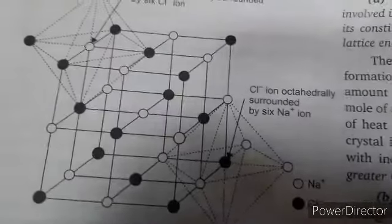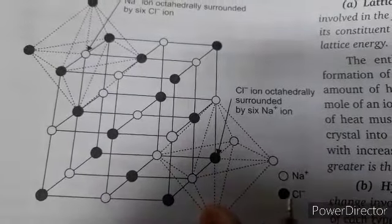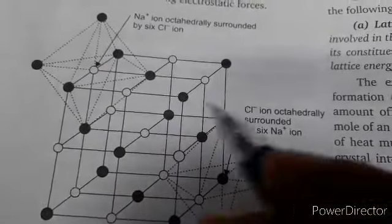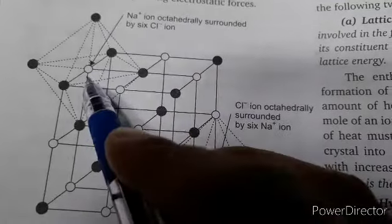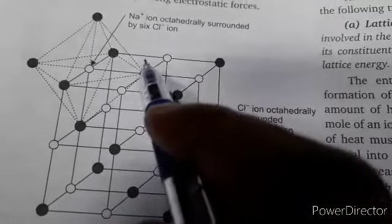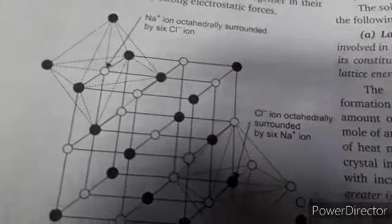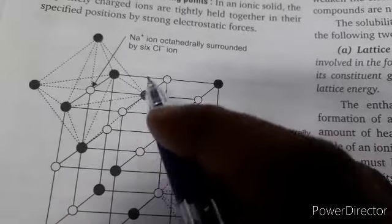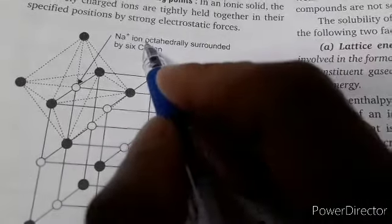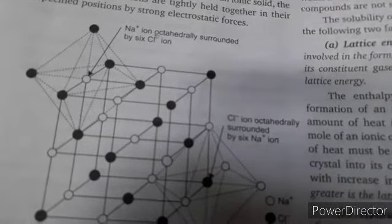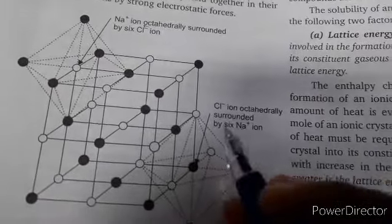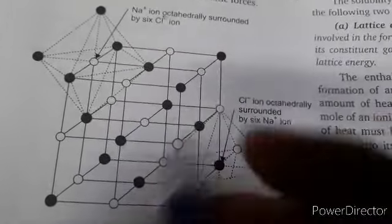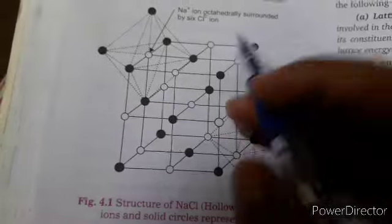In the NaCl crystal lattice, sodium ions (Na⁺) and chloride ions (Cl⁻) are arranged so that one Na⁺ ion is surrounded by six Cl⁻ ions, and one Cl⁻ ion is surrounded by six Na⁺ ions — they are octahedrally surrounded by each other. Don't be confused: octahedral refers to the geometry here with six neighbors. The ions are in fixed positions within the crystal lattice.